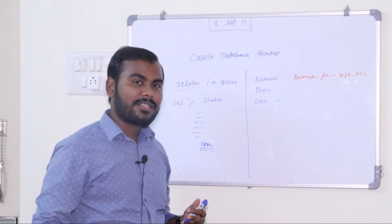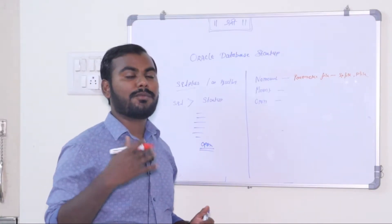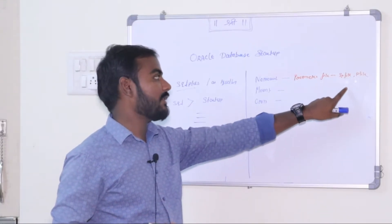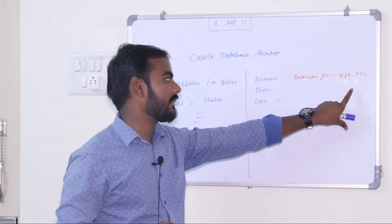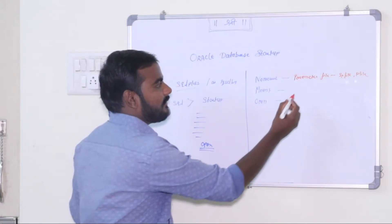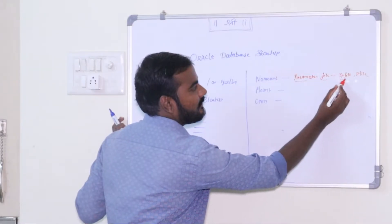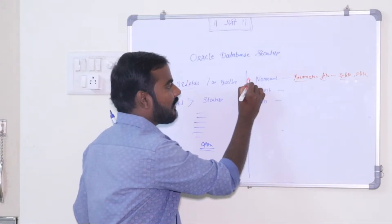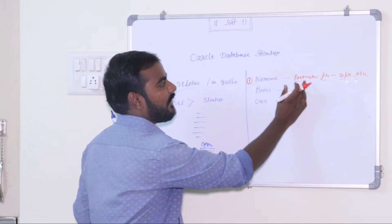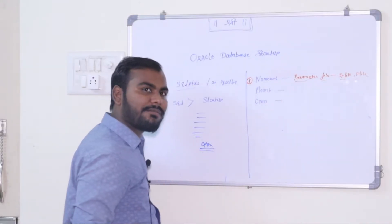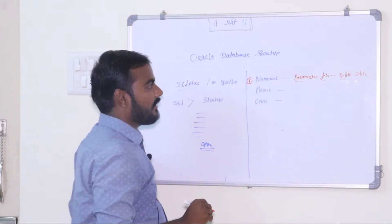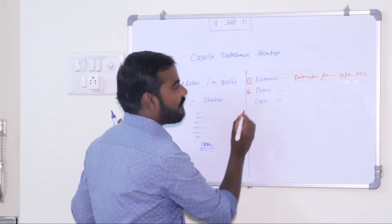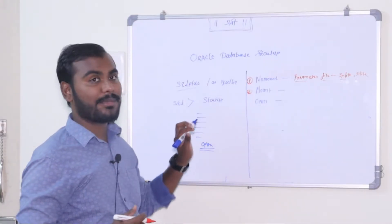You also have the option to manually start the database using a P file if you want — that control is in your hands. So when the startup command is issued, the database first goes into the No Mount stage and finds the parameter file, defaulting to the SP file. The next stage is Mount, which is the second stage of Oracle database startup.